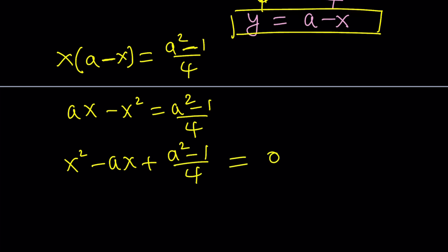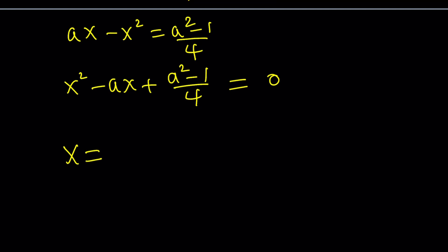So this is my quadratic. You can multiply both sides by 4. It's totally up to you if you want. Or you can directly use the quadratic formula. It's going to give you the exact same thing. No big deal. Just a matter of preference. So x from here by using the quadratic formula is going to be negative b plus minus the square root of b squared, which is a squared minus, this is the fun part, minus 4ac. a is 1. c is a squared minus 1 over 4. And this is where the 4s cancel out. Beautiful.